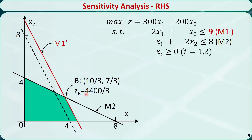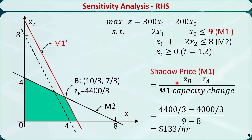Now let's perform sensitivity analysis on the right-hand side of the constraints. For machine 1, we want to know: if we increase the available time by 1 hour, from 8 to 9, how much will the z value change? In this graph, the constraint for machine 1 changes to M1', and the optimal solution moves to point B. The objective function value at point B is 4400/3. The shadow price of machine 1 is the new z value minus the old z value divided by machine 1's capacity change, which equals $133 per hour.